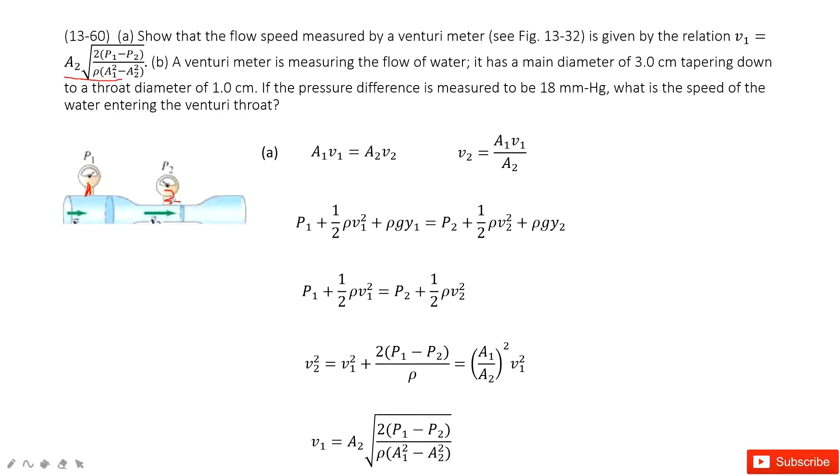First we consider continuity equations. Because the volumes moved from position 1 equal to volumes moved from position 2, we have a1v1 equal to a2v2. Then we can write v2 as a function of v1.